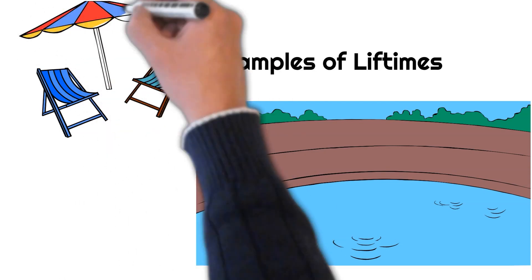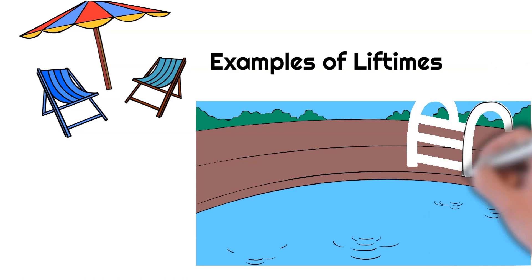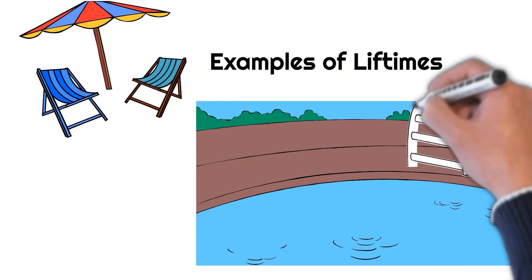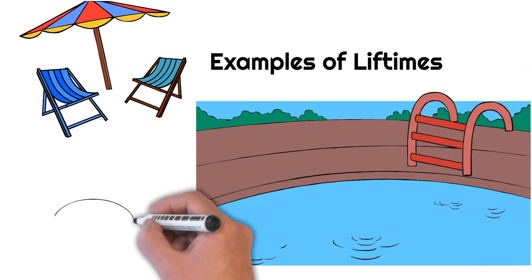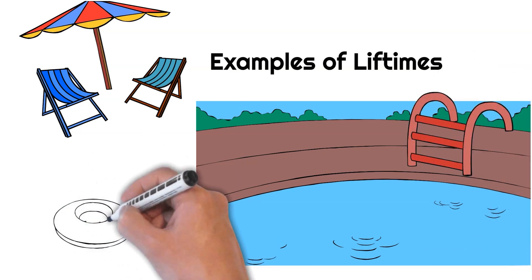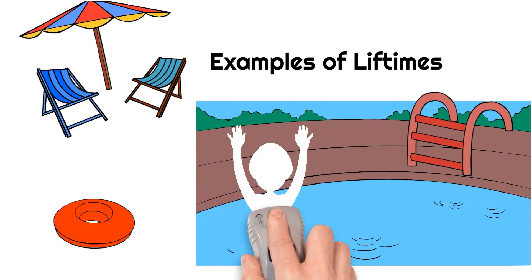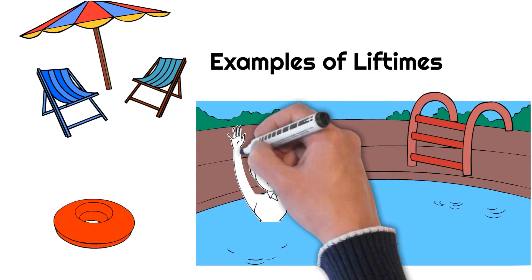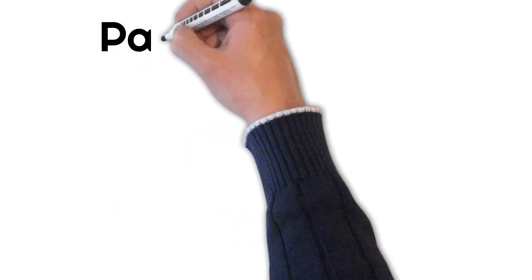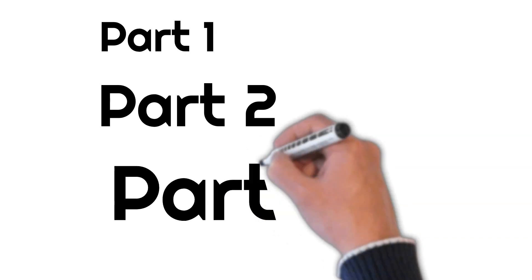We also explain how generic lifetimes work in Rust functions, which allow you to write reusable code that can handle different types of data. With the help of practical examples, you will learn how to apply these concepts to create more flexible and efficient Rust programs. This is part one of a three-part series covering lifetimes in Rust.